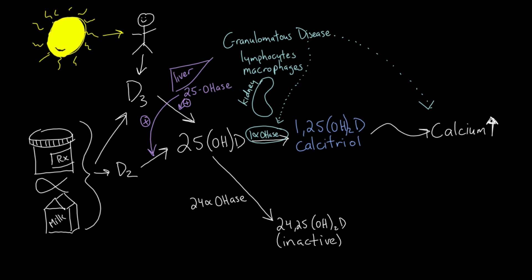Calcitriol negatively inhibits 1-alpha-hydroxylase. Calcitriol also negatively feeds back on the parathyroid gland to decrease production of parathyroid hormone.